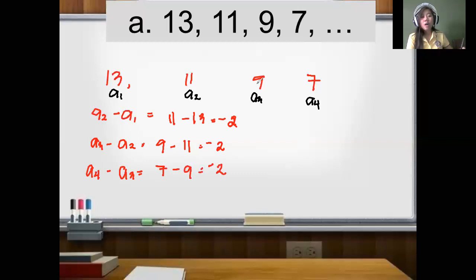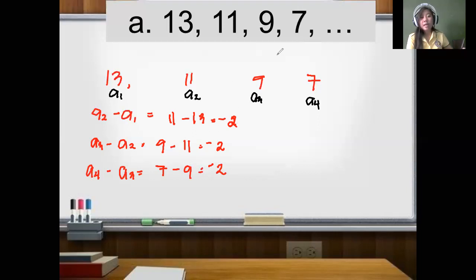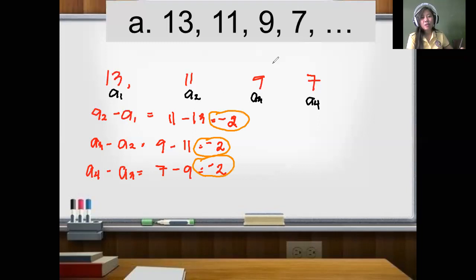The common difference of the sequence 13, 11, 9, and 7 is negative 2. We can say that example A is an arithmetic sequence because all consecutive terms share the same common difference of negative 2. When we say arithmetic sequence, they must have a common difference.